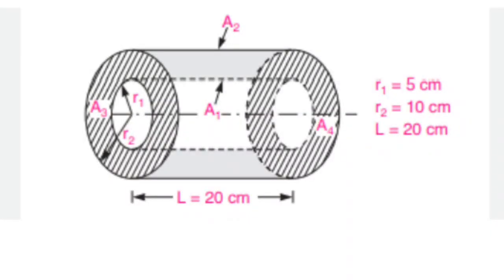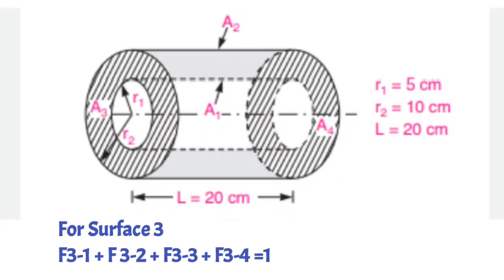For two concentric cylinders, surface area A1 is of convex shape, surface area A2 is of concave shape, and the side surface areas A3 and A4 are plane surfaces. This question will be solved in three steps. We will apply the enclosure theorem to surface 3: F(3→1) + F(3→2) + F(3→3) + F(3→4) = 1. We need to find F(3→2) and F(3→1) by applying the enclosure theorem to surface 1 and surface 2.